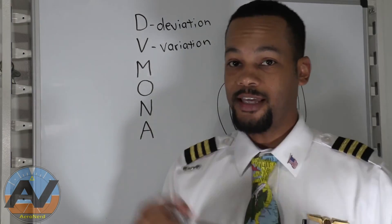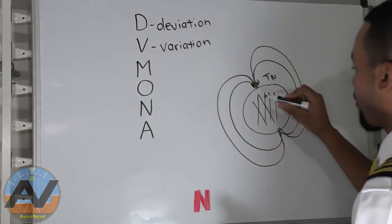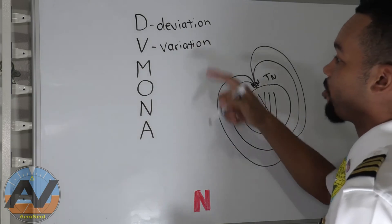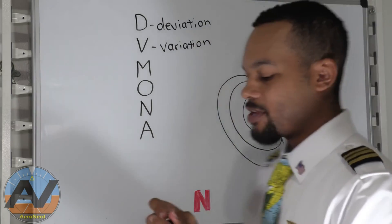V, variation. Remember from your private training, east is least, west is best. Well, that is from our variation. That's literally what variation is for.